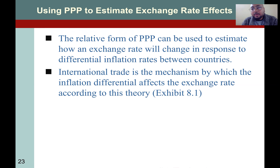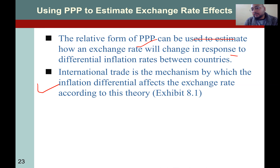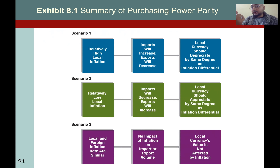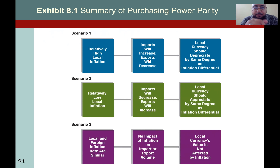Using PPP to estimate exchange rate effects: the relative form of PPP can be used to estimate how exchange rates will change in response to the differential in inflation. International trade is the mechanism by which inflation differentials affect the exchange rate. If you have relatively high local inflation, your currency will go down; when your currency goes down, your products look cheaper to the outside world and your exports start rising. Relatively high local inflation means imports will increase and exports will decrease, and the local currency should depreciate by the same degree as the inflation differential.